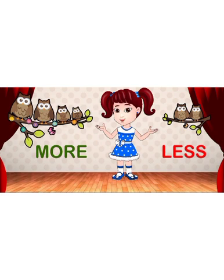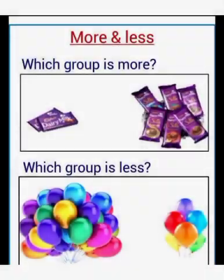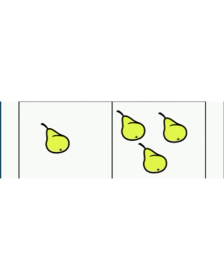Now let's look at more pictures based on more and less. Here we have two jackfruit trees — one is big, one is small. There are more jackfruits on the big tree and less jackfruits on the small tree. You know, the jackfruit of this big tree tastes like honey! Now put a tick mark on which is less, and find out which group is more and which group is less.